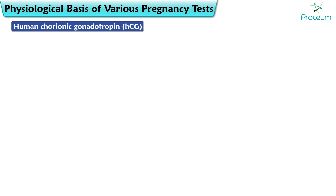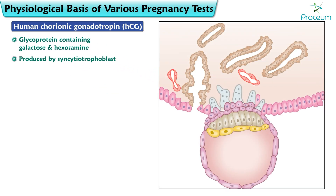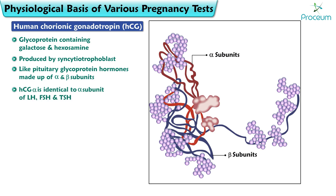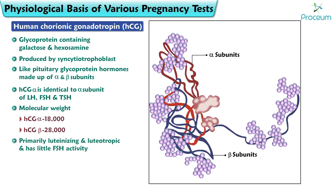Human chorionic gonadotropin is a glycoprotein that contains galactose and hexosamine. It is produced by the syncytiotrophoblast. Like the pituitary glycoprotein hormones, it is made up of alpha and beta subunits. The alpha subunit is identical to that of luteinizing hormone, follicle-stimulating hormone, and thyroid-stimulating hormone. The molecular weight of HCG alpha is 18,000 and that of HCG beta is 28,000. HCG is primary luteinizing and luteotropic and has little follicle-stimulating hormone activity.